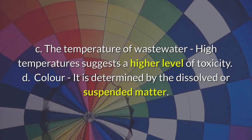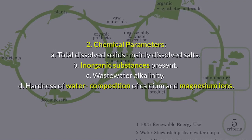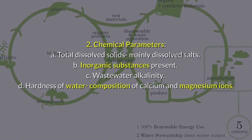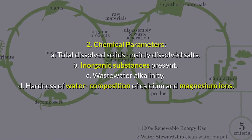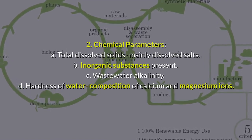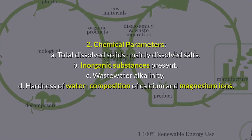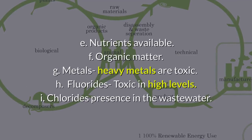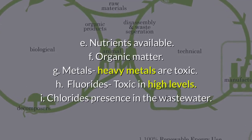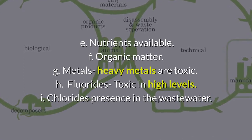Color is determined by the dissolved or suspended matter. The second category is chemical parameters. These include: total dissolved solids, mainly dissolved salts in the wastewater; inorganic substances present; wastewater alkalinity; and hardness of water, which is the composition of calcium and magnesium ions.